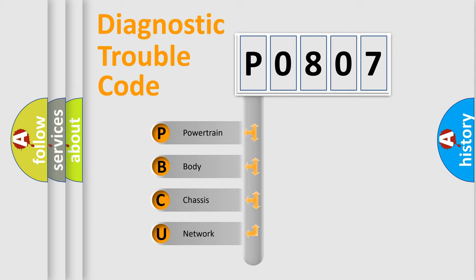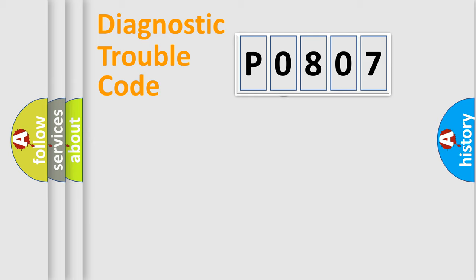We divide the electric system of automobile into four basic units: Powertrain, Body, Chassis, Network. This distribution is defined in the first character code.